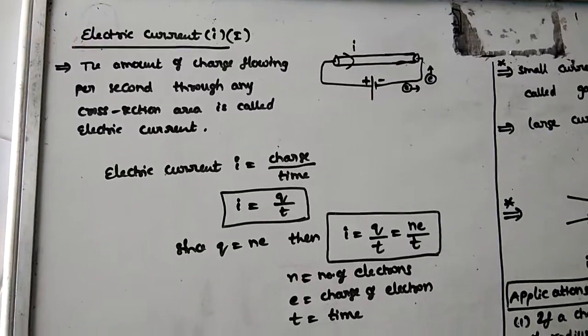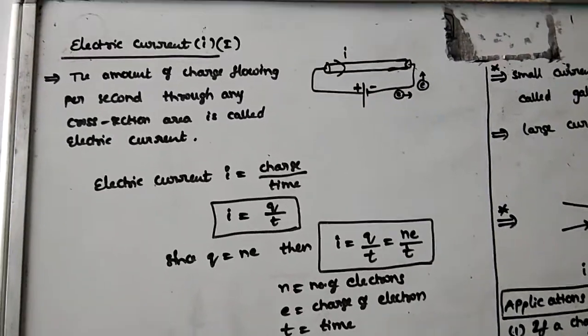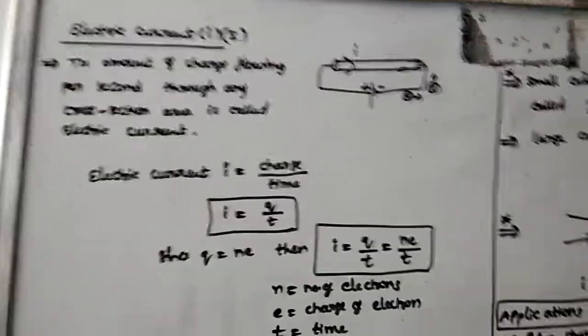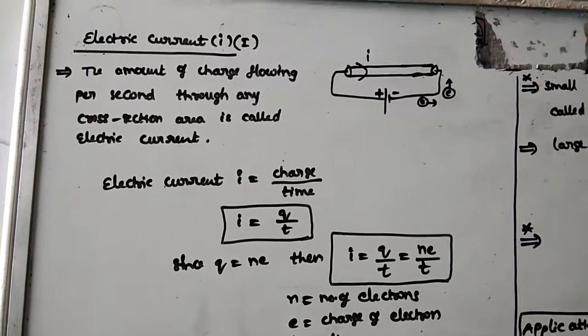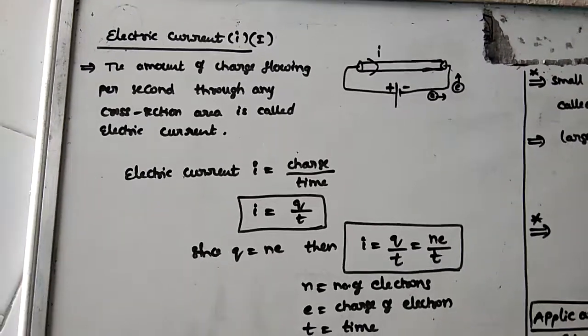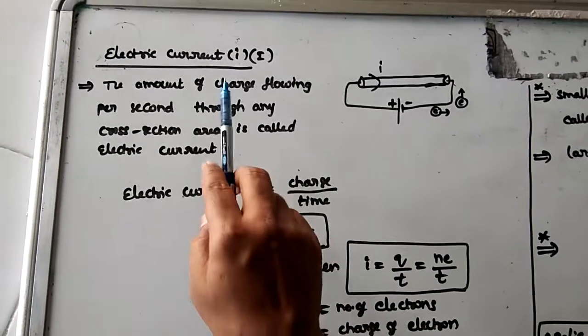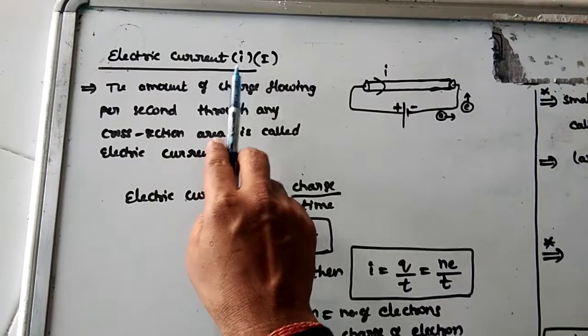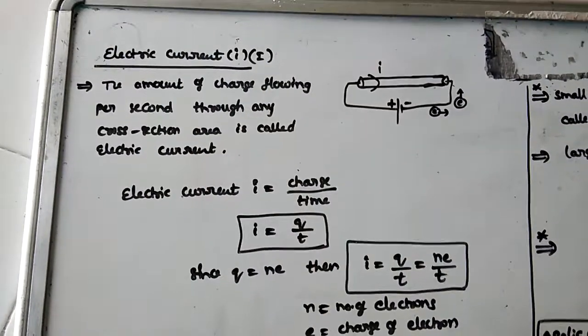Hello Class 10 students, welcome to this very important concept: electric current. It is generally denoted by the symbol I, either small i or capital I.